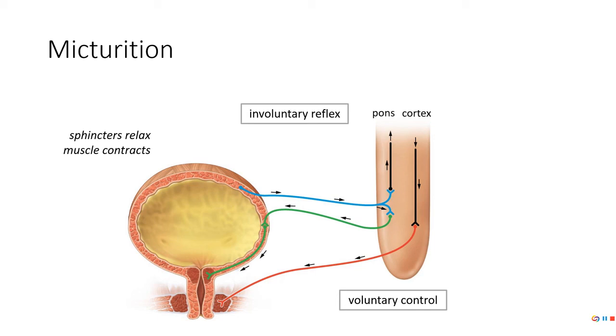The parasympathetic nervous system, here's our stretch receptors, there's our afferent, there's our efferent. So we cause the detrusor muscle to contract and our internal sphincter to relax.